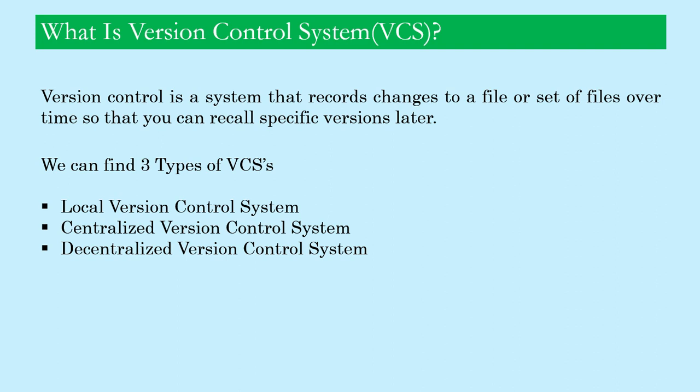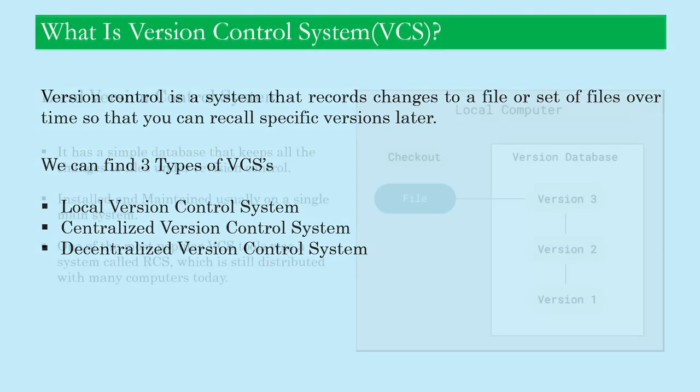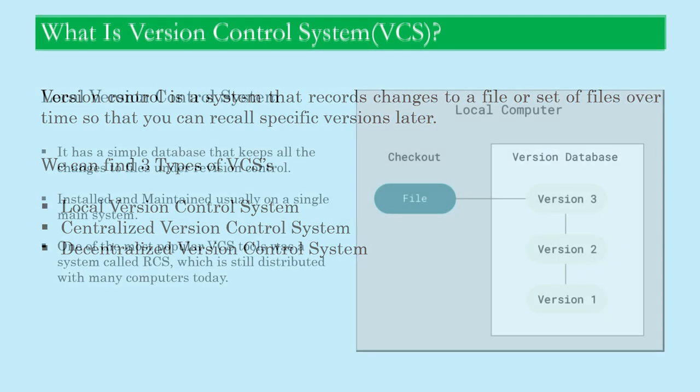We can find three types of version control systems: local version control system, centralized version control system, and decentralized or distributed version control system.